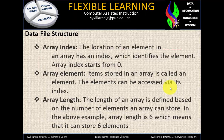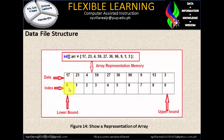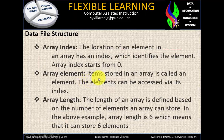Array index: the location of an element in an array has an index which identifies the element. Array index starts from zero — you will notice the index starts with zero, and that is what you call the lower bound. Array element: items stored in an array are called elements, and the element can be accessed by its index.